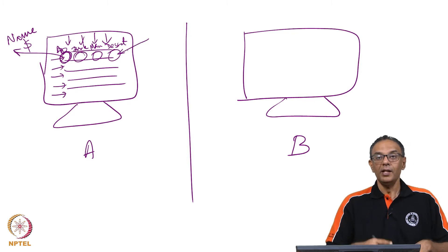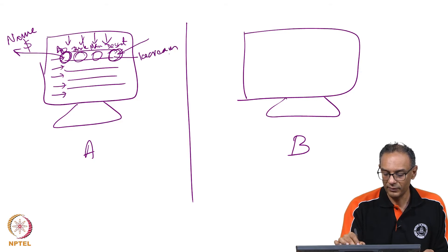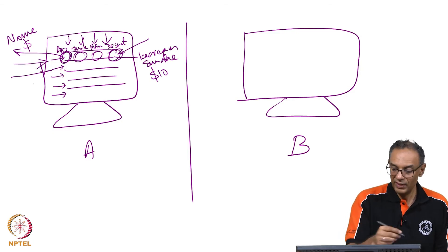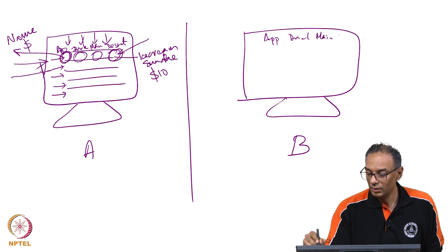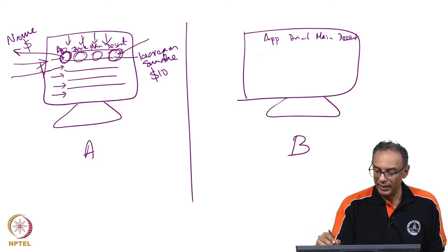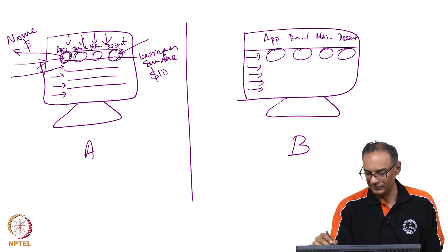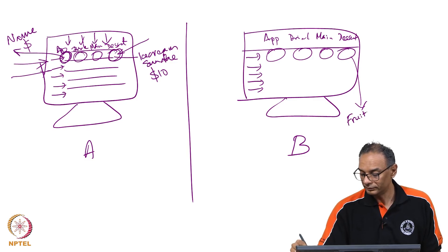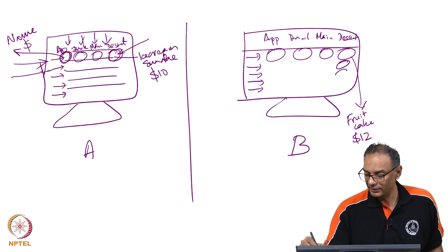For example, you could see something like an ice cream sundae for $10 listed under dessert for option one. Similarly, for restaurant B as well, you will have an appetizer, a drink, a main course, and a dessert, with the item name and price listed for each of the five options.